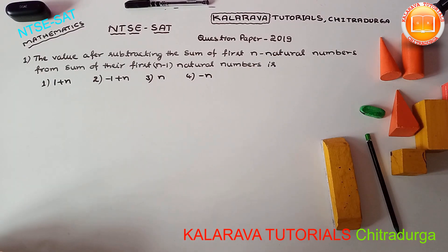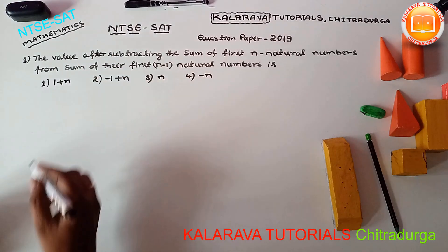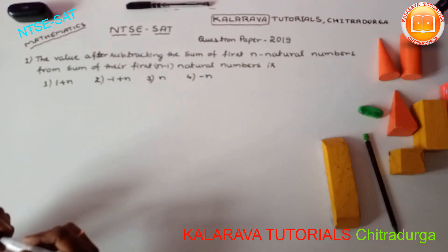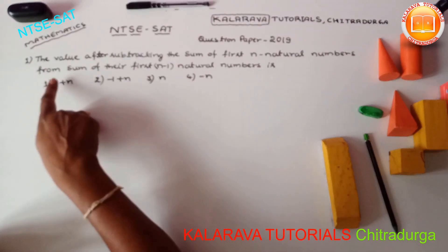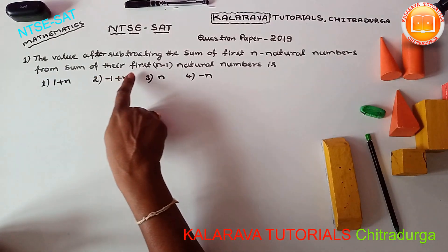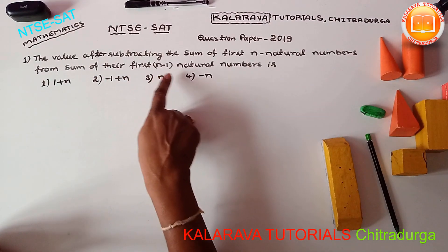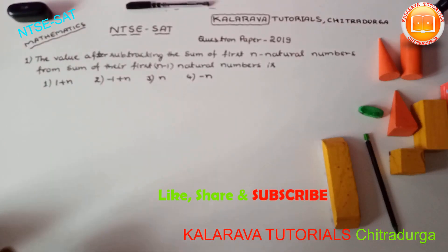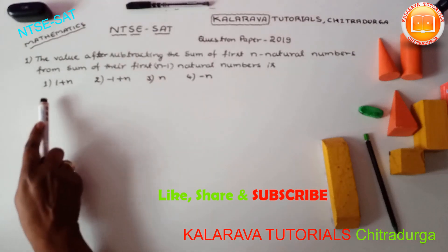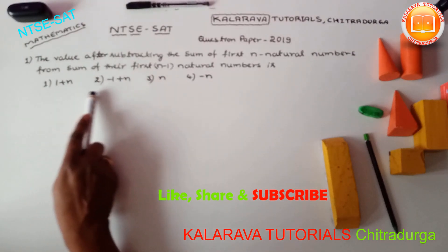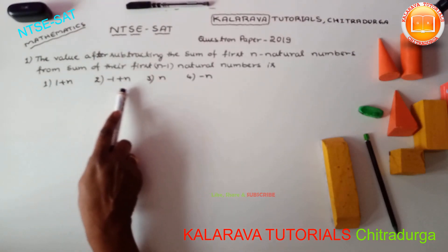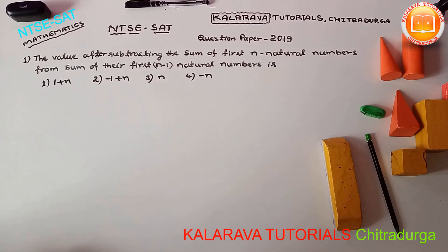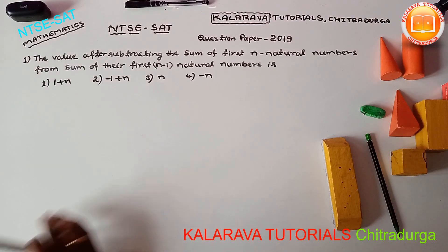The value after subtracting the sum of the first N natural numbers from the sum of the first N minus 1 natural numbers is given with options: first option is 1 plus N, second option is minus 1 plus N, third option is N, and fourth option is minus N.